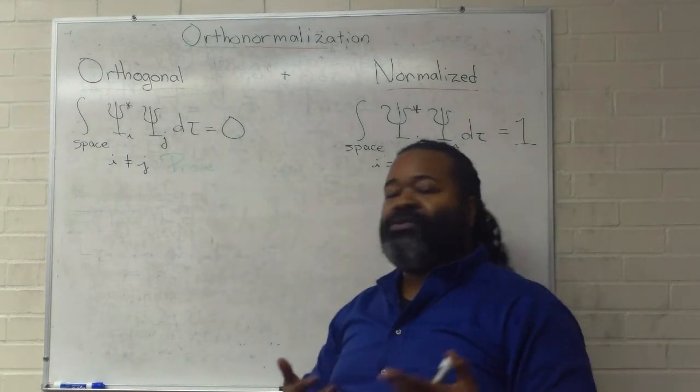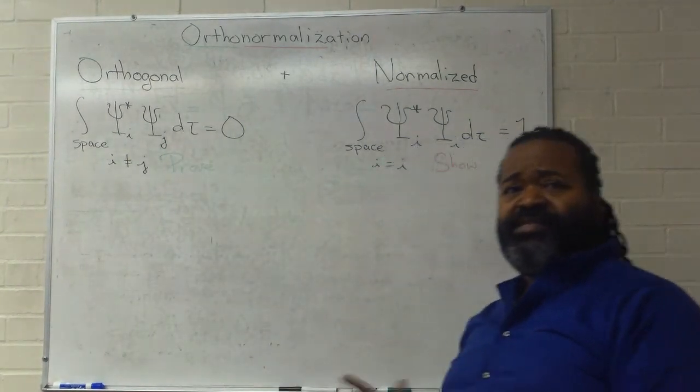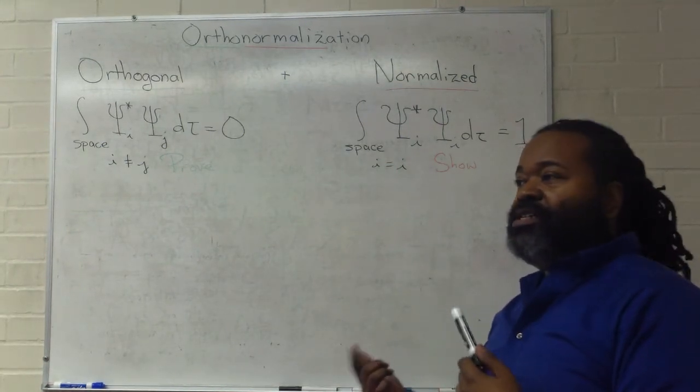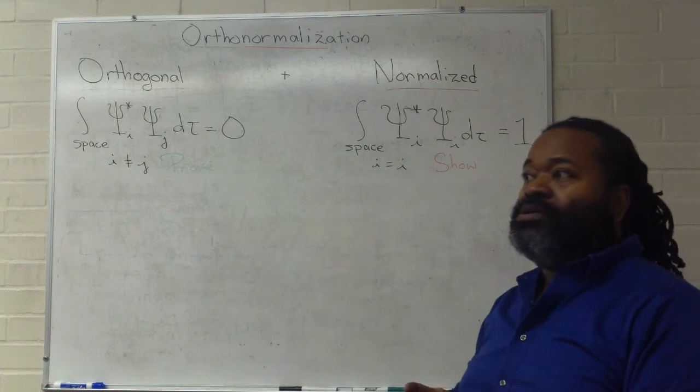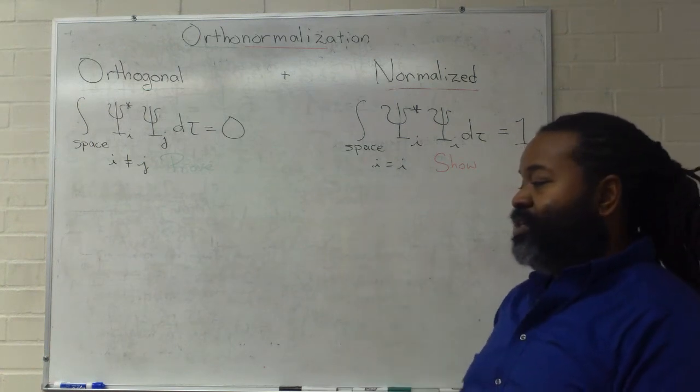D tau is a typical volume element that's determined by the differential for the system itself. Depending on whether you have polar coordinates or spherical coordinates or cylindrical coordinates, Cartesians, what have you, that's going to change in form.